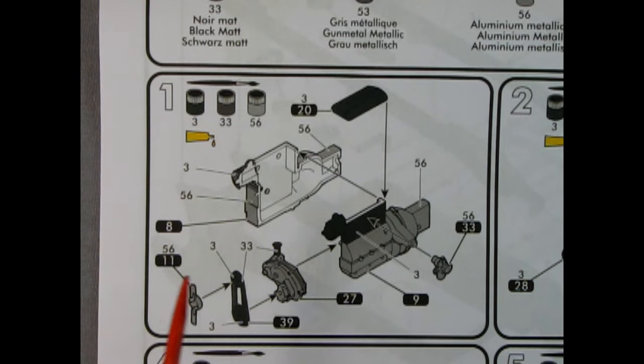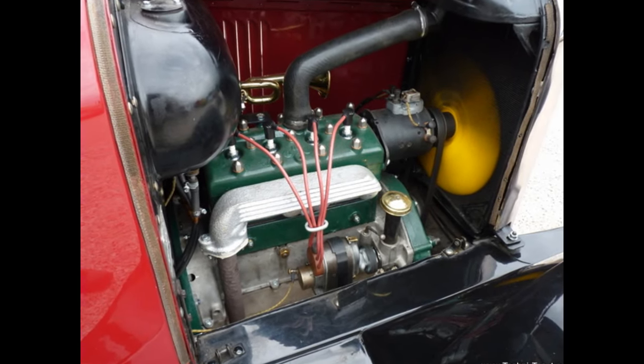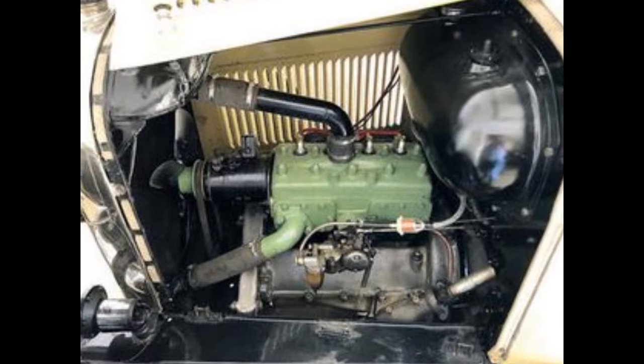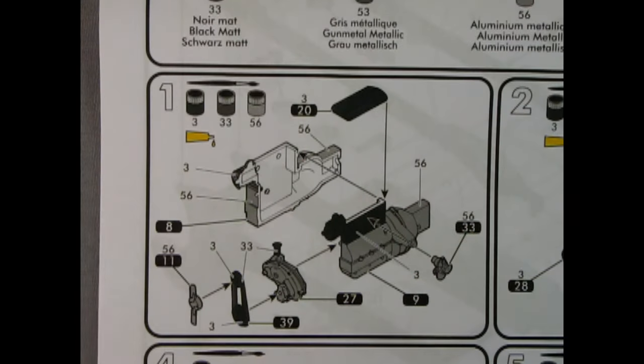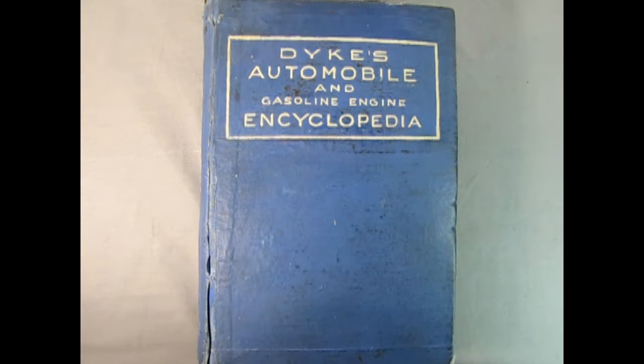We begin our 1926 Citroën B14 Normandy with the multi-piece engine assembly. I found that the parts fit of the engine went together tightly and without any issues. The main issue is that Heller never labeled the engine parts, so some research is involved to understand the pieces. Online research has been difficult. However, I do have my uncle's 1926 Dykes Automobile and Gasoline Engine Encyclopedia.